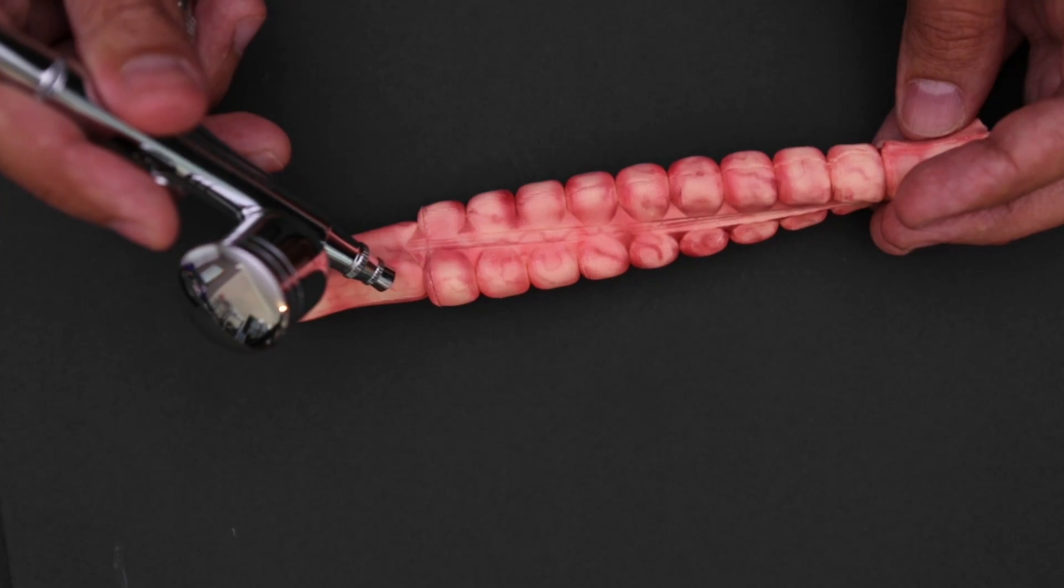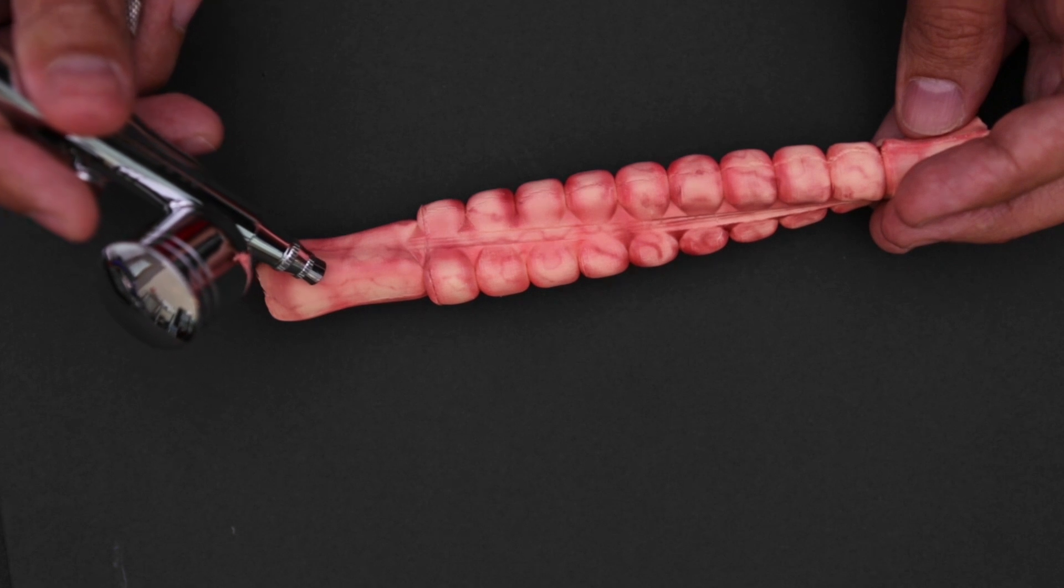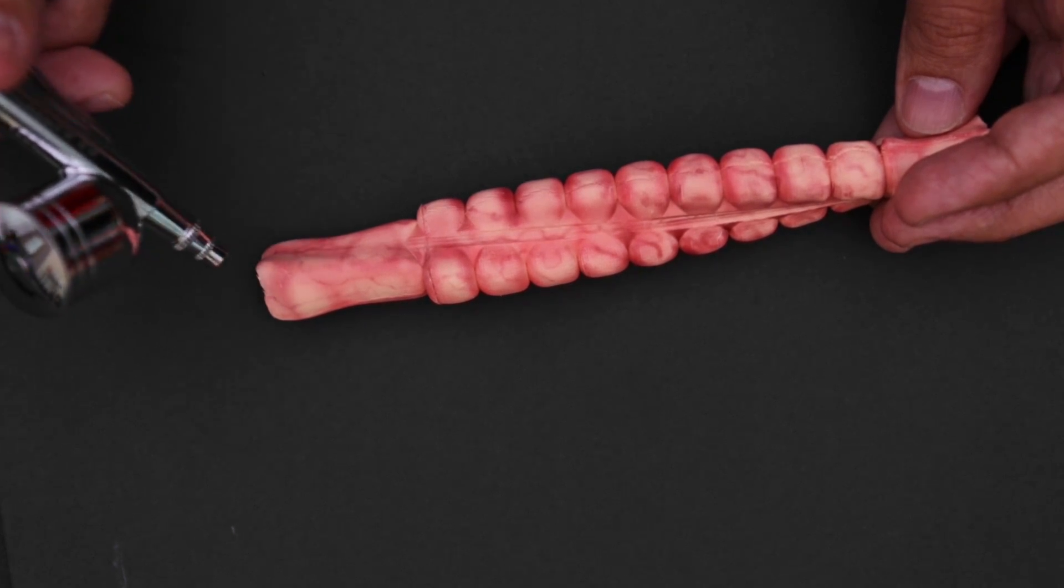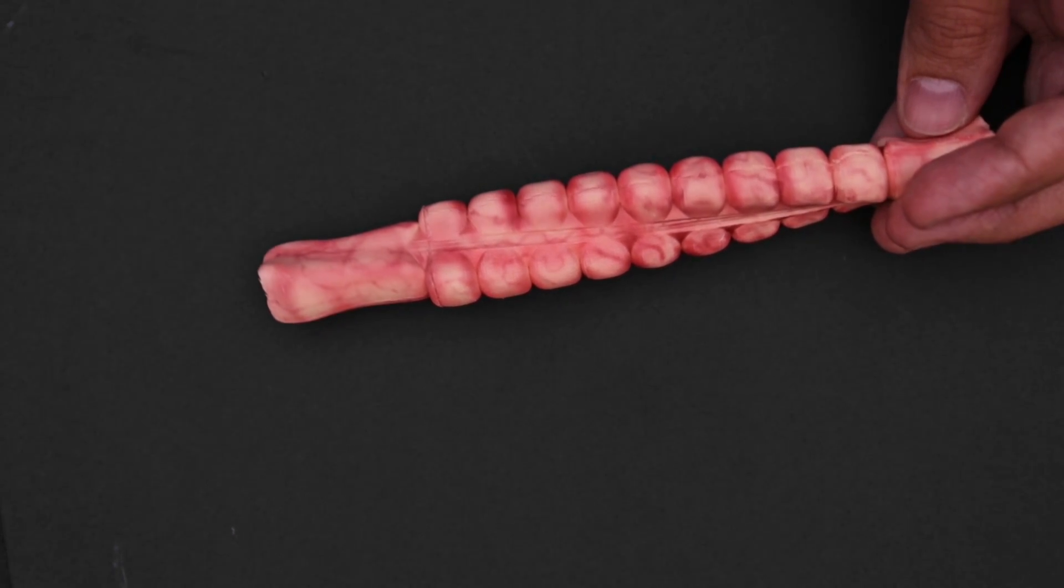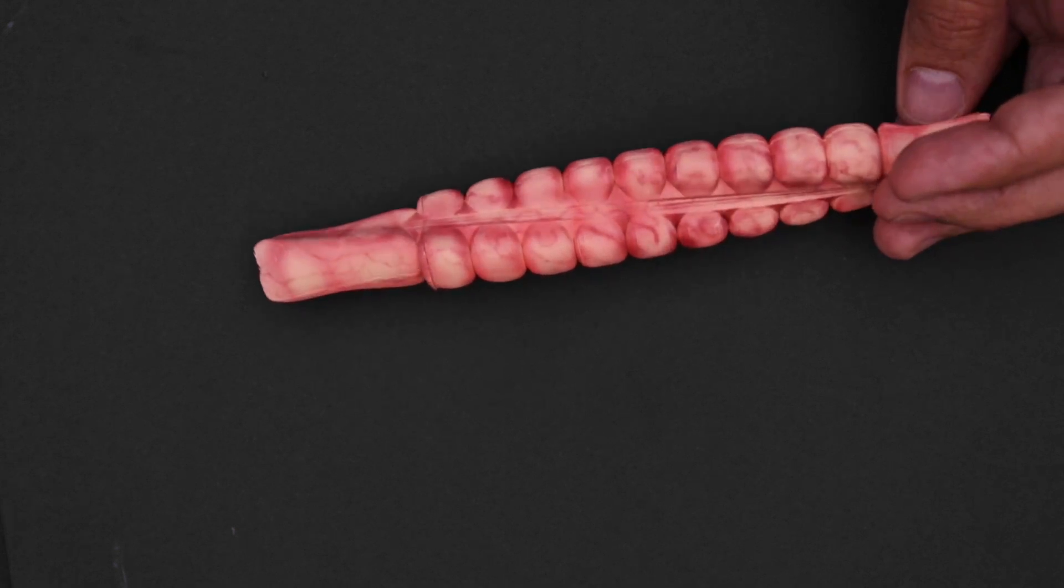Once you have all of the layers coated, we can move on to adding the veins. Spraying at close distances will give you thin lines. Again, we suggest practice spraying on a failed print or prototype to get a feel for it.